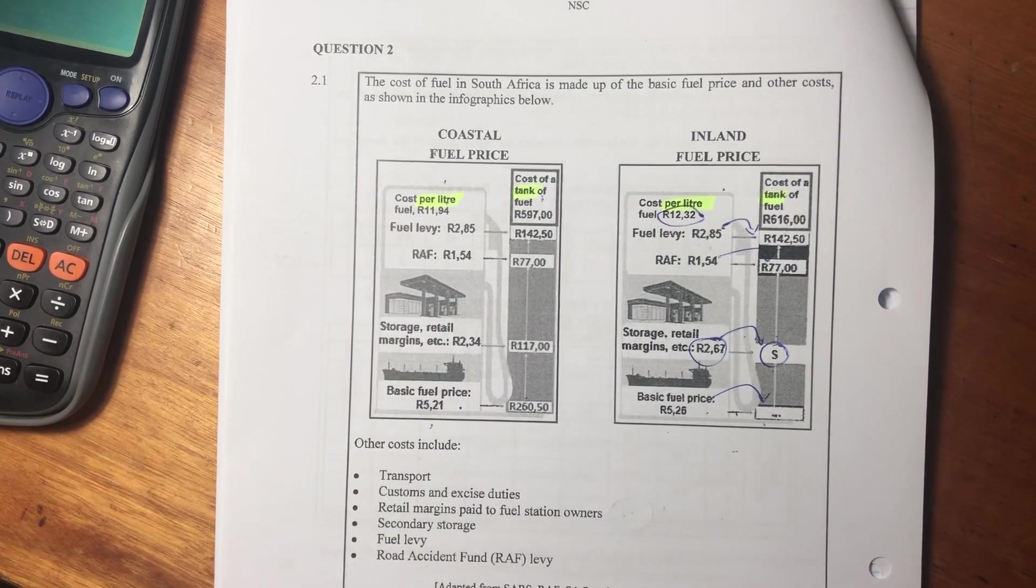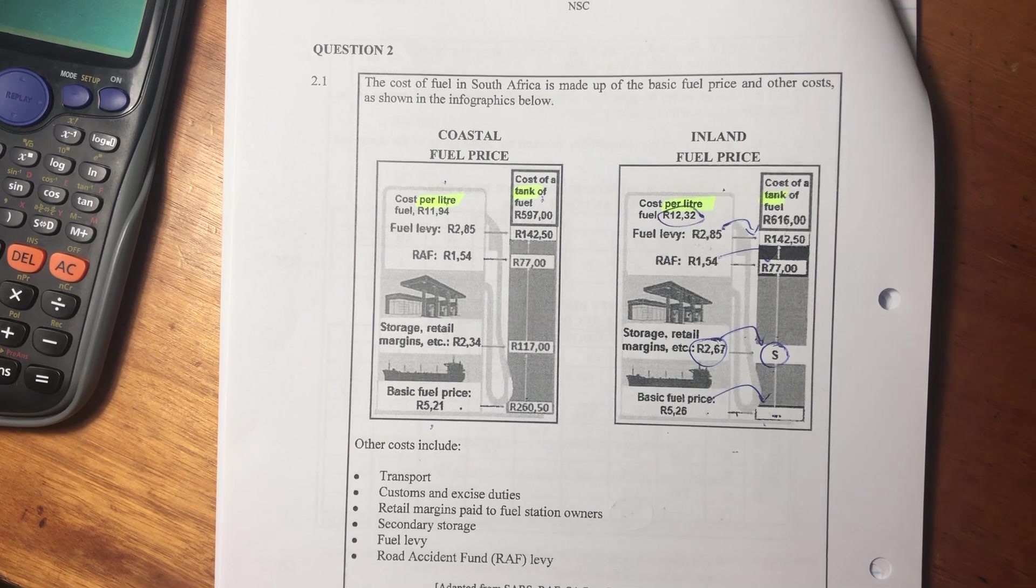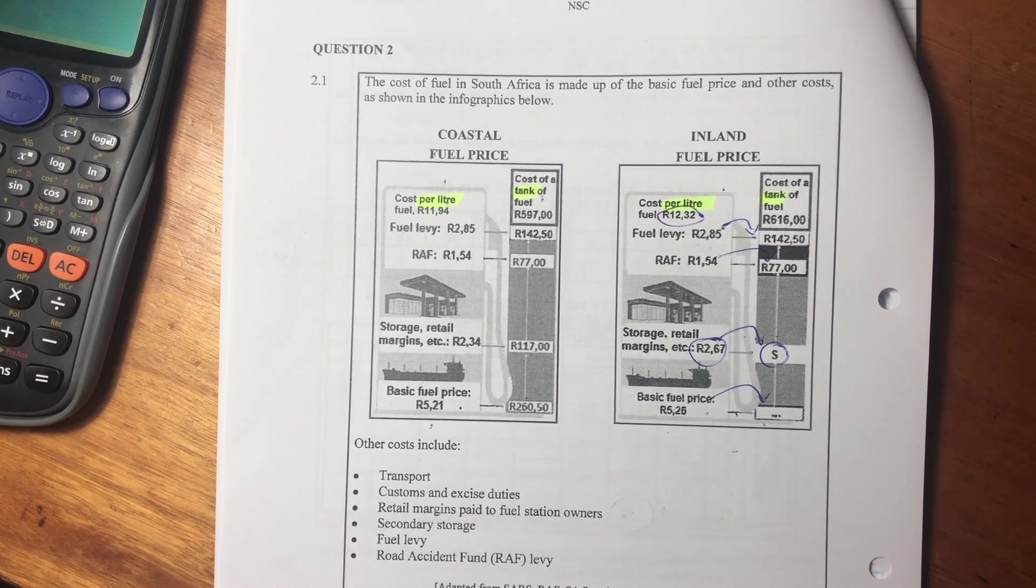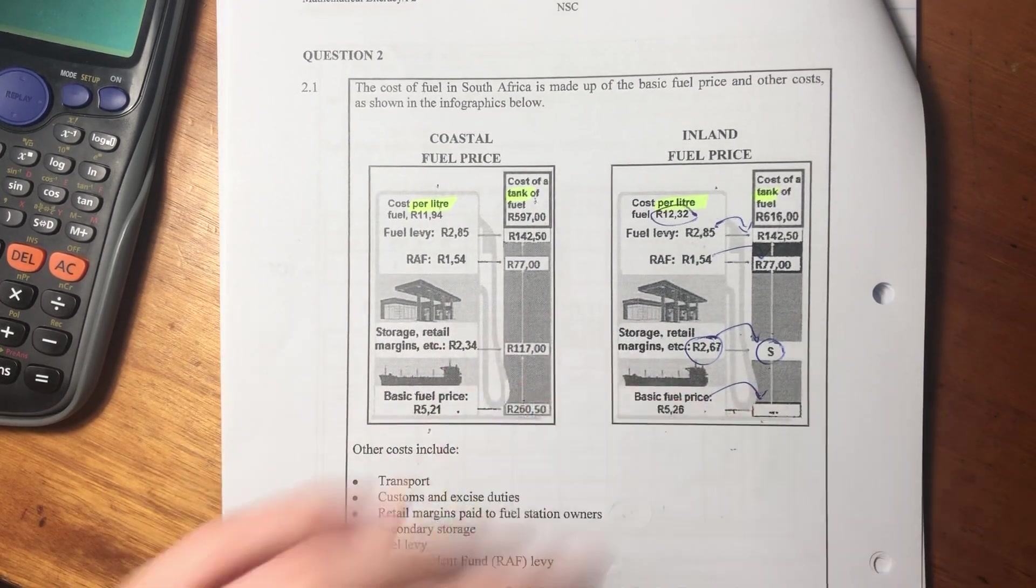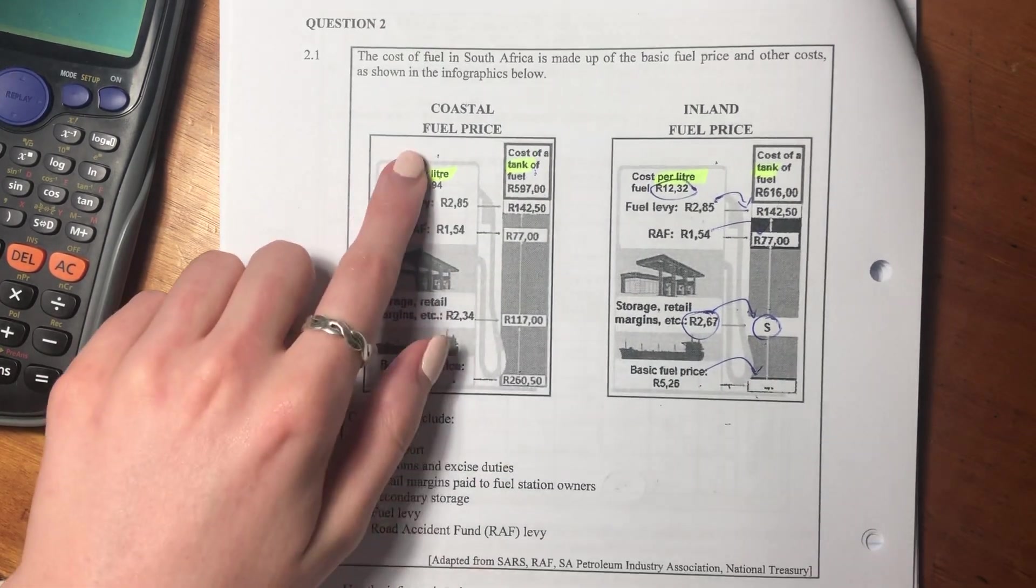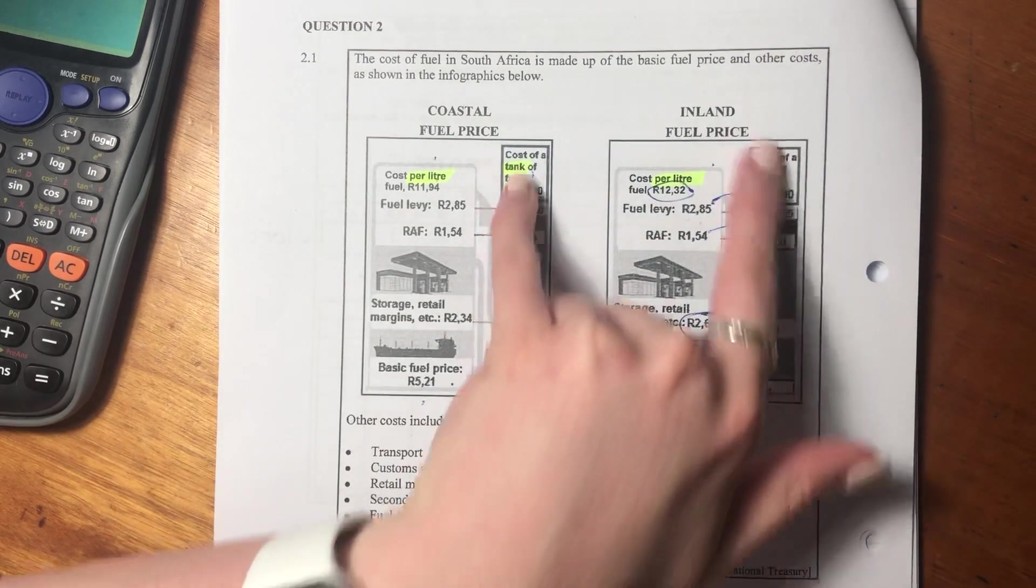So this is the cost of fuel in South Africa is made up of the basic fuel price and other costs as shown in the infographic below. We have the coastal fuel price and we have the inland fuel price. We see that we have the cost per liter and we have the cost per tank.